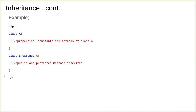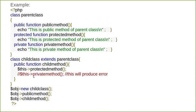Here is a small example. We define class A, then inside we define all the properties, constants, etc. Then class B extends A - you give the name of the parent. So class A is the parent and class B is the child. This is the general syntax for inheritance.